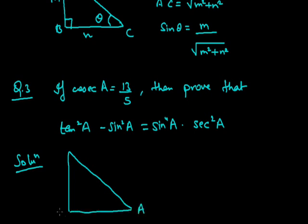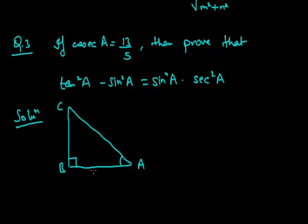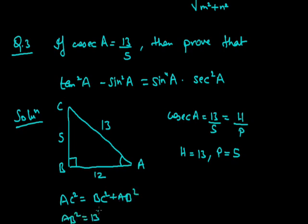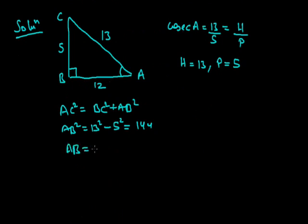Suppose we take angle A at vertex A, with vertices B and C. Cosec A = 13/5. Since cosec θ = hypotenuse/perpendicular, comparing gives hypotenuse = 13 and perpendicular = 5. Using Pythagoras theorem: AC² = BC² + AB², so AB² = 13² − 5² = 169 − 25 = 144, giving AB = √144 = 12 cm.